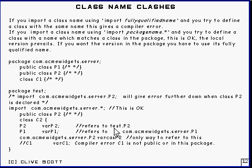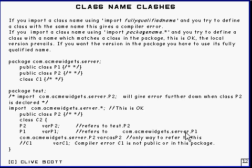So it will refer to Test.P2. And just for good measure, there's a variable P1 declared here, and that's going to refer to com.acme.widgets.server.p1. Now, if you want to get P2 from the imported package, you've got to specify its fully qualified name: com.acme.widgets.ver.p2. That's the only way, in fact, to get that P2.